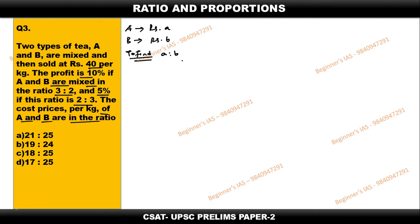This is important - always try to identify what we need to find, then move on to the statements given. Here the cost price is not given, it is given the selling price. You know the concept: selling price equals cost price plus profit. So now let us see - A and B are sold at rupees 40 making a profit of 10 percent if they are in the ratio 3:2.